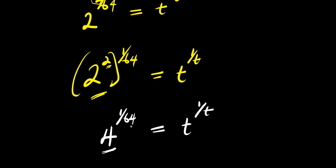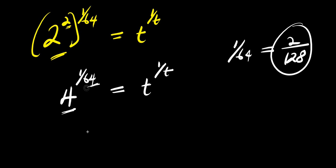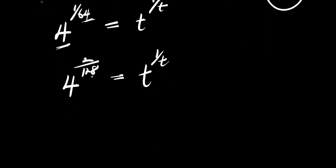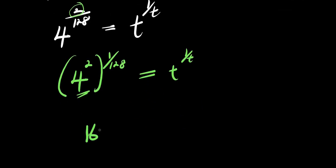Now the base here is still not the same, so we go back to equivalent fractions. 1 over 64 is the same as writing 2 over 128. So I insert that and have 4 to the power of 2 over 128, equals t to the power of 1 over t. I factor out the 2 again: 4 to the power of 2, all to the power of 1 over 128. 4 to the power of 2 is 4 times 4, that is 16. So I am going to have 16 to the power of 1 over 128, equals t to the power of 1 over t.